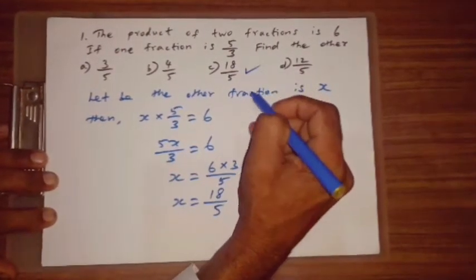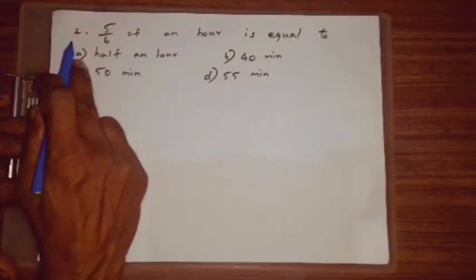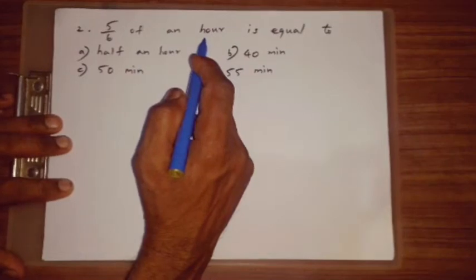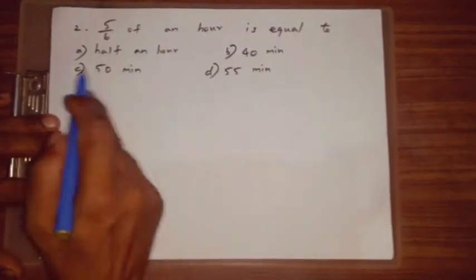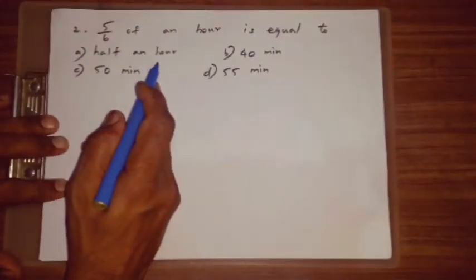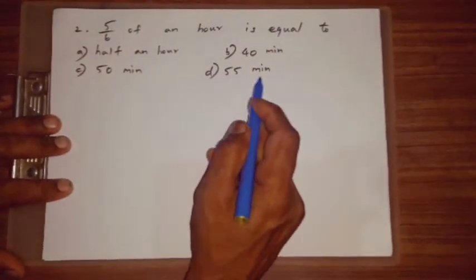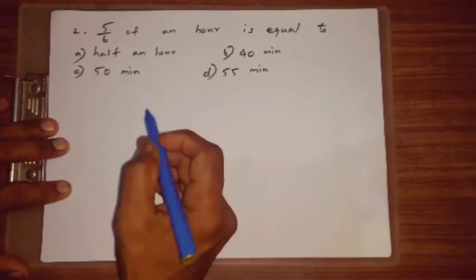Question number 2. 5 by 6 of an hour is equal to A. of an hour, 40 minute, 50 minute, 55 minute. So, how to find.